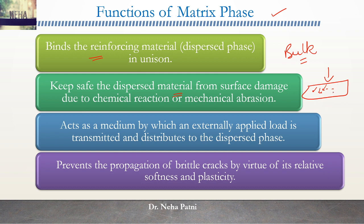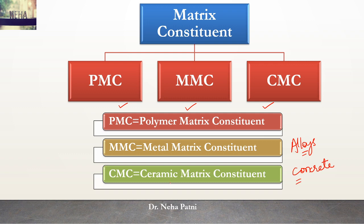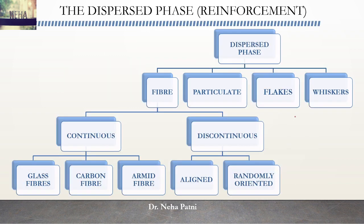The matrix also prevents the propagation of cracks. Matrix could be of three types: the first is polymer matrix constituent, second is metal matrix constituent, and the third is ceramic matrix constituent. If you take polymer as the major matrix you call it PMC; if you are taking metal as the major matrix it would be MMC; and if you are taking ceramic - like concrete - the ceramic would be the major constituent. Edible materials like glucose are polymer constituents.